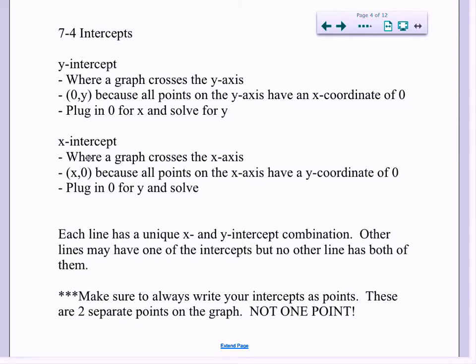Okay, in contrast, the x-intercept is where a graph crosses the x-axis, and now if you think of all the points on the x-axis, they all have a y-coordinate of 0. So each line has a unique x and a unique y-intercept, like the unique combination of the two. Some of them might share an x-intercept, but their y-intercepts will be different. Make sure to write your intercepts as points. These are two separate points on the graph, not one point, and you'll see that as I work through some examples.